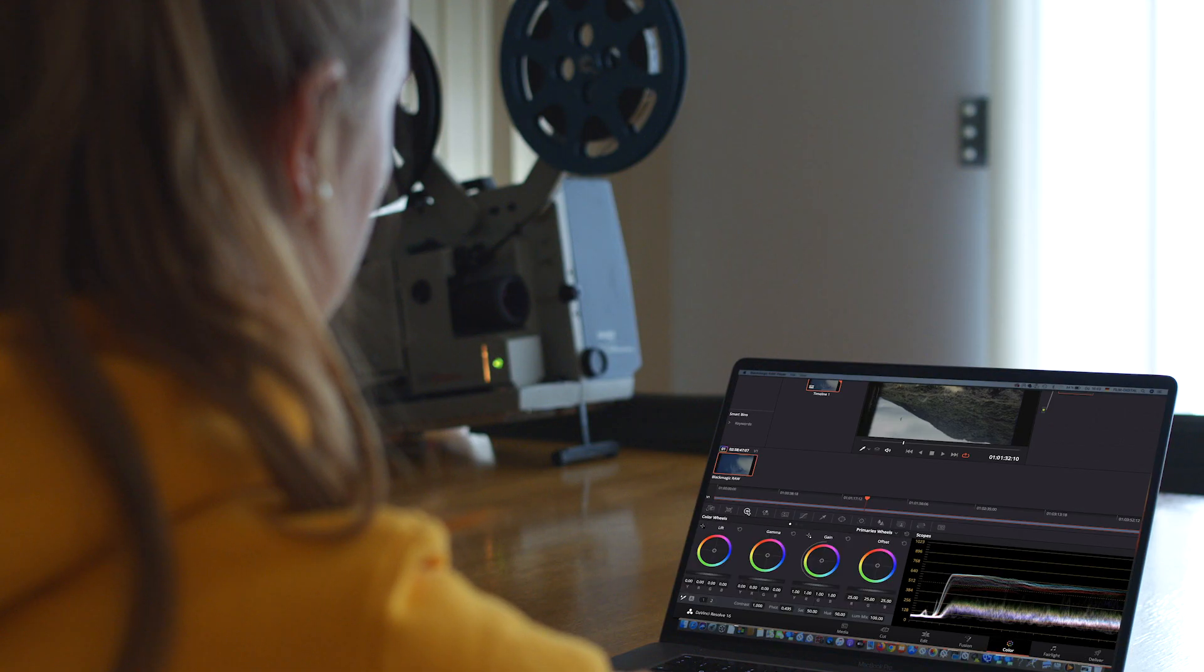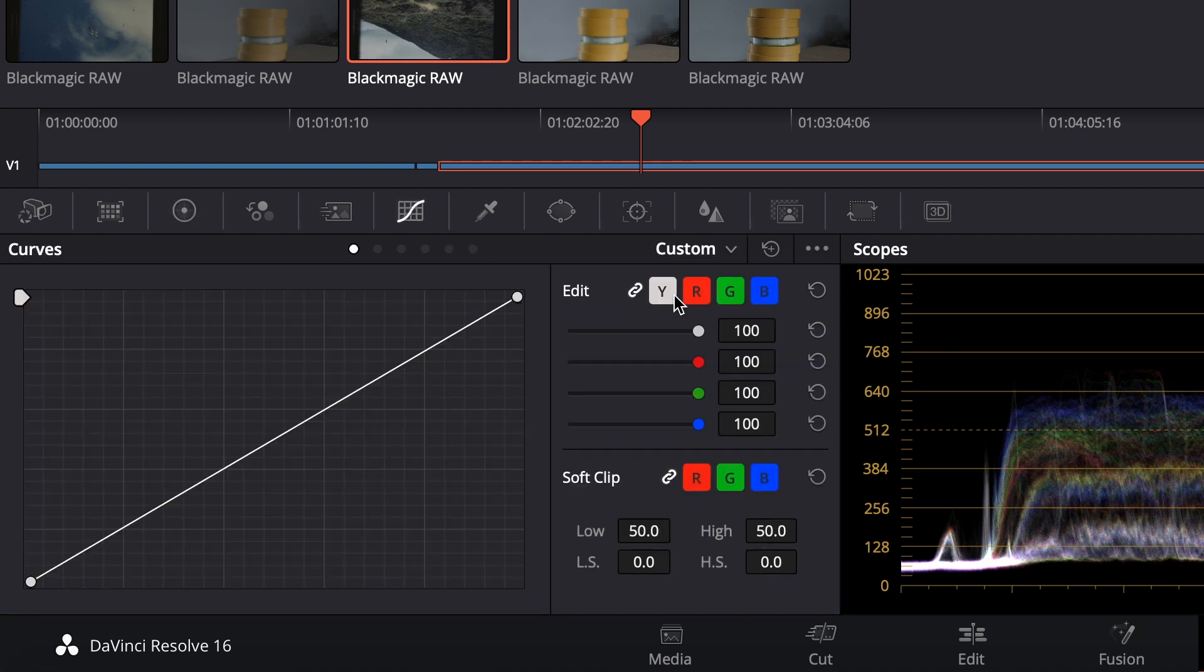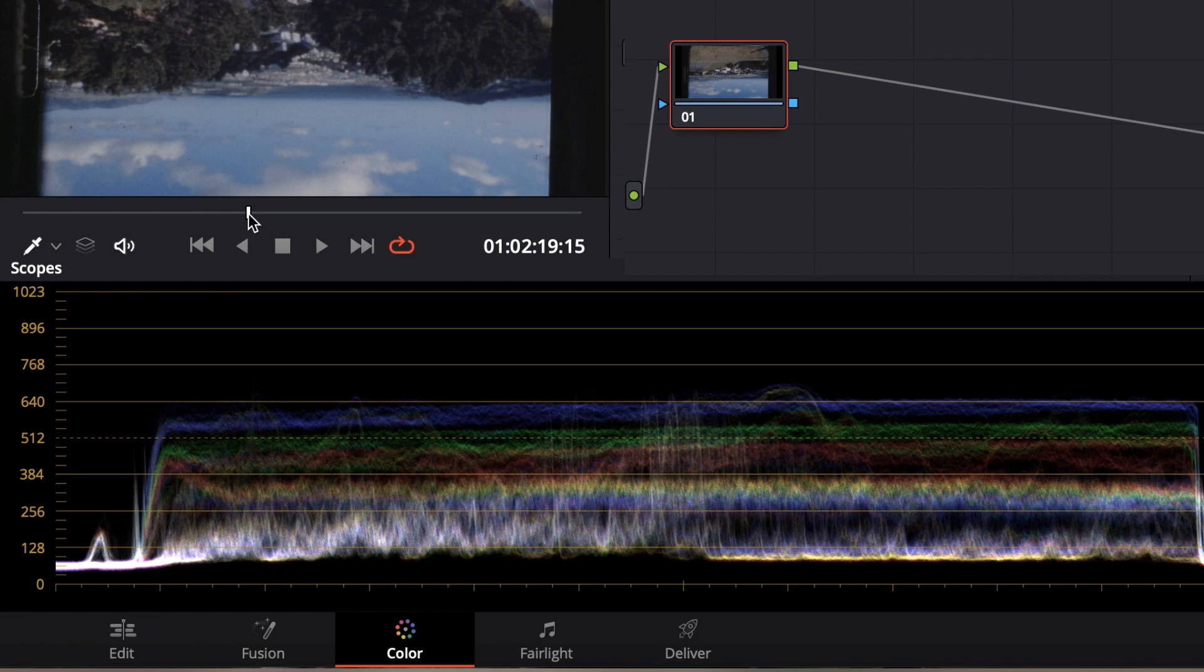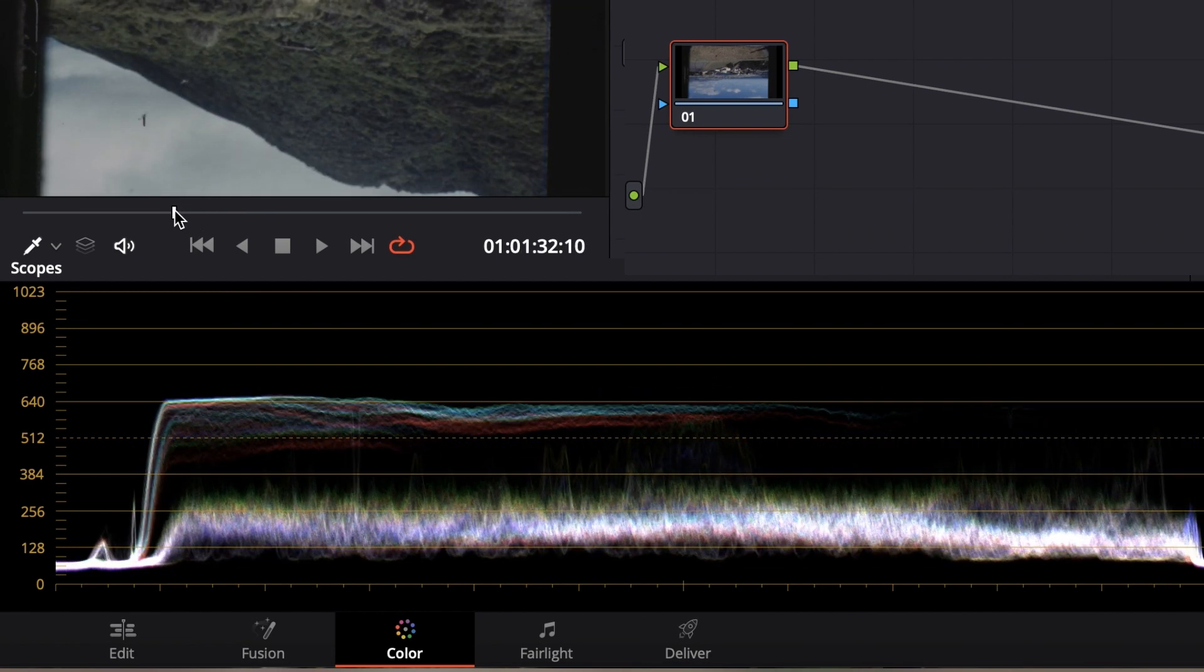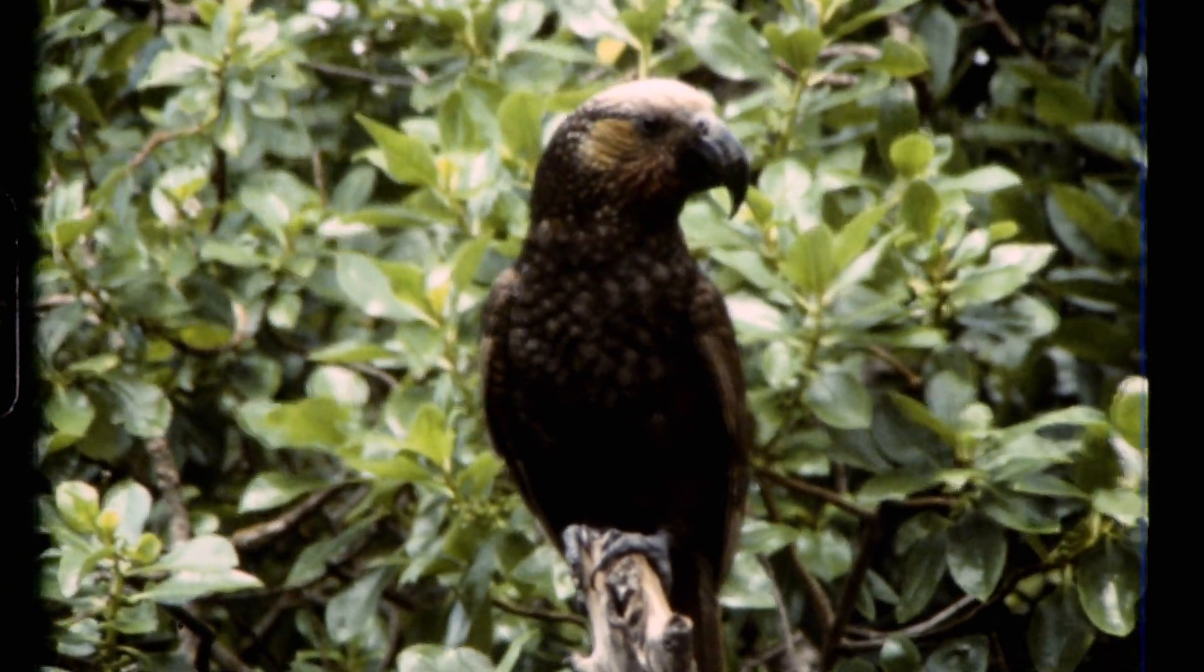Furthermore, there are color wheels, color bars, gradation curves, and many other tools available. With the scopes, the color distribution is visualized. We graded the material so that it appears as close as possible to the color impression on the not-discolored Kodak film.